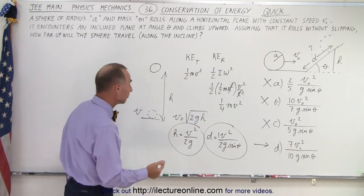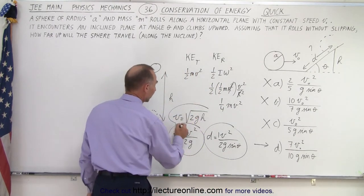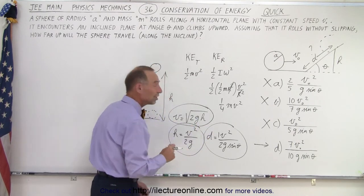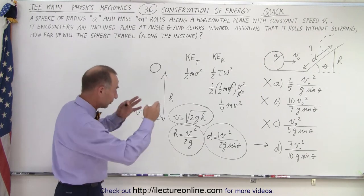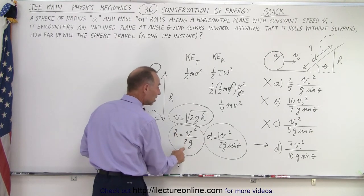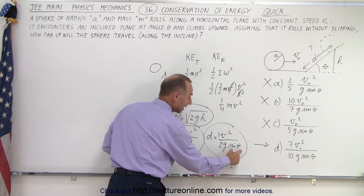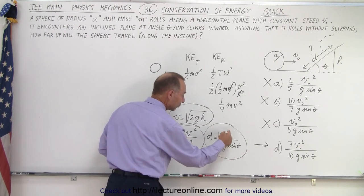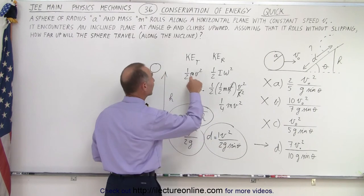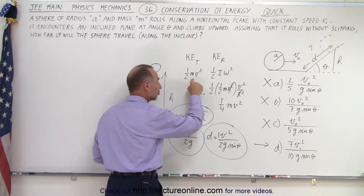So, by simply taking advantage of our knowledge that v equals the square root of 2gh for a falling object, when we have height converted into velocity or velocity converted to height, the height will be v squared over 2g. With the incline, we get the sine theta in the denominator. And then notice that one half v squared over g sine theta belongs to the kinetic energy translational energy only.